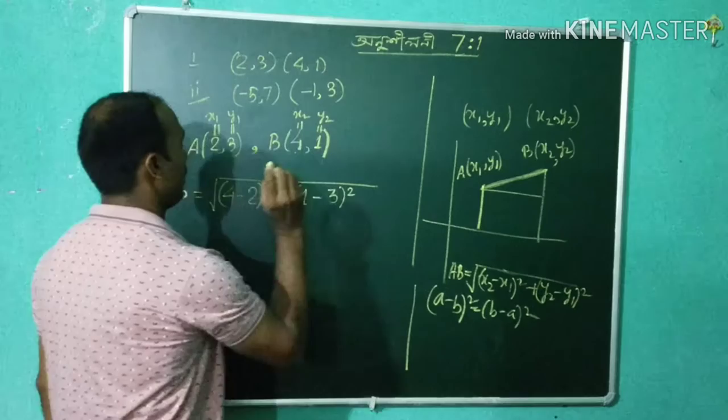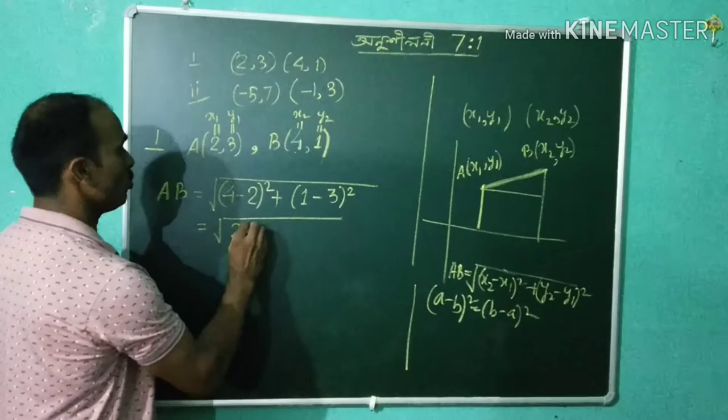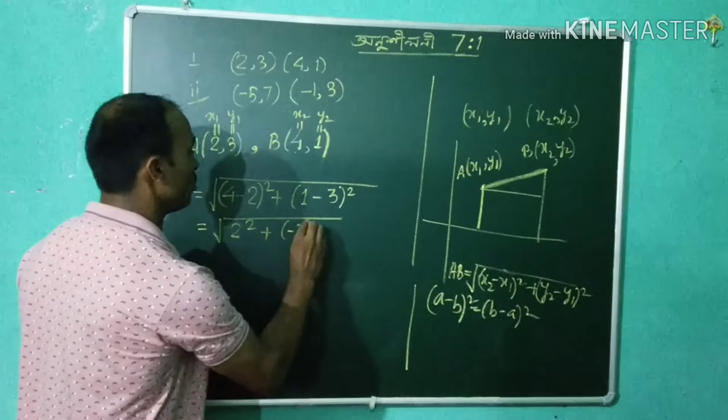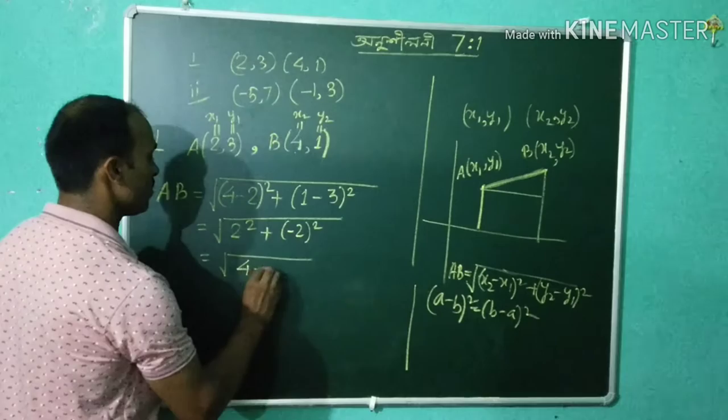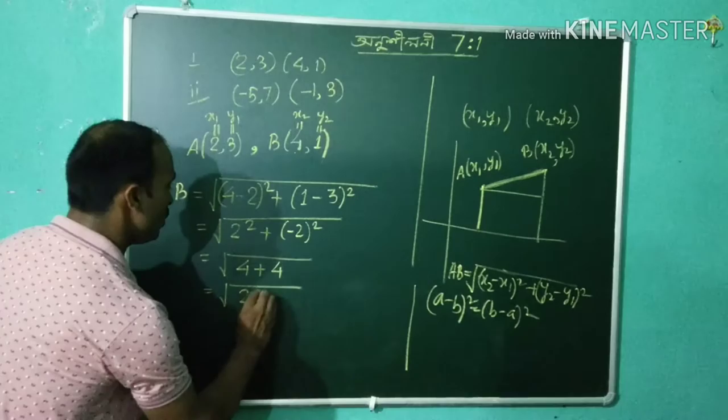That means (4 minus 2) whole square is 2 squared, which equals 4. Plus (1 minus 3), that is minus 2, squared, which also equals 4. So we get 4 plus 4.